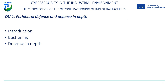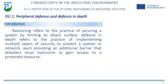It is necessary to distinguish between peripheral or bastioned defence and defence in depth. Defence at the edge or bastioning and defence in depth are terms used in computer security to describe two different approaches to protecting a system or network. While bastioning refers to securing a system by limiting its attack surface, defence in depth refers to implementing multiple layers of security, each providing an additional barrier that attackers must overcome to access a protected resource.